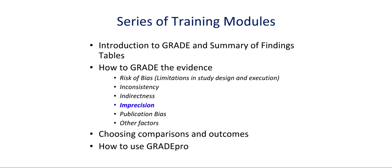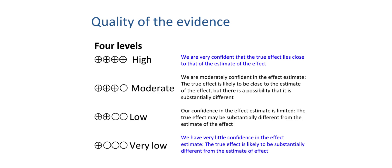This module will deal with imprecision and how judgments in GRADE are made about imprecision and precision. Remember, the quality of evidence is categorized into four levels: high or 4-plus quality, moderate or 3-plus quality, low or 2-plus quality, and very low or 1-plus quality evidence, expressing that we have very little confidence in the effect estimate.